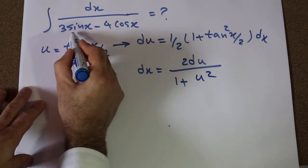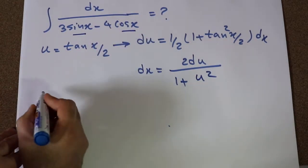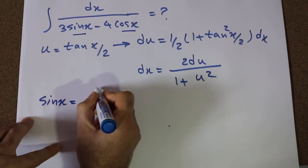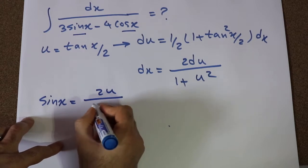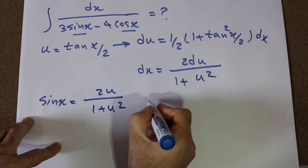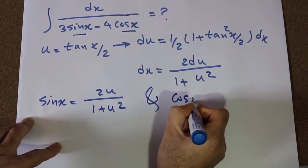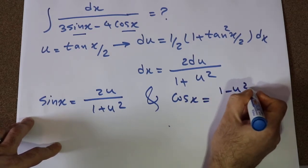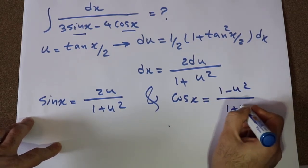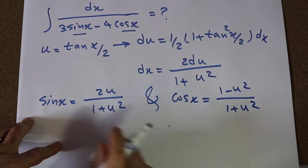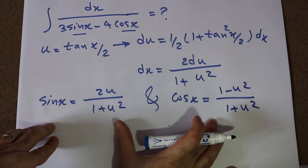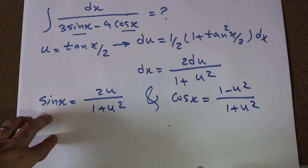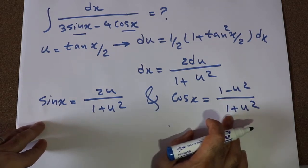Also in this integral, you have sine x and cosine x. Using trigonometry, you can show that sine x equals 2u divided by 1 plus u², and cosine x equals 1 minus u² divided by 1 plus u². If you're not sure how to obtain these equations, write in the comment section and I will show you.